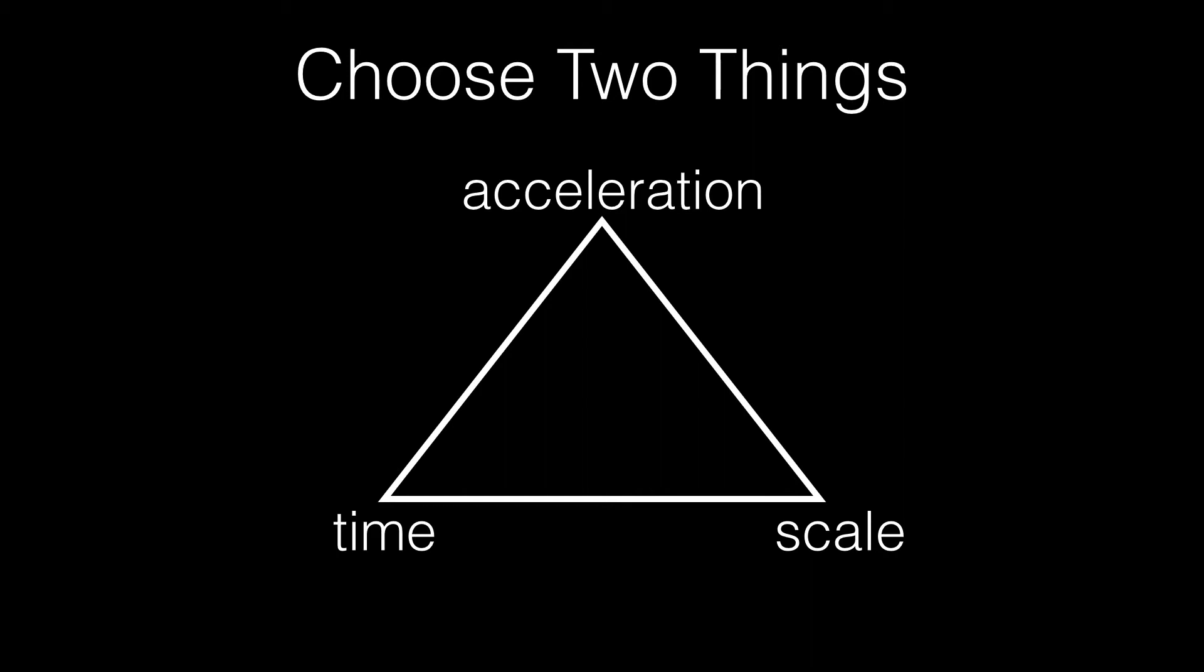What if I went the other way? What if I assumed the acceleration was negative 9.8, and the scale was correct, but the video was just in slow motion, and I want to find the correct time.